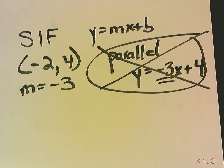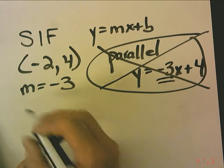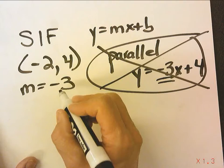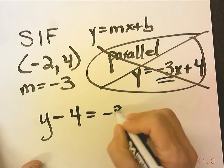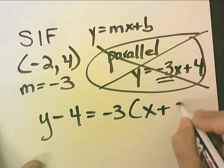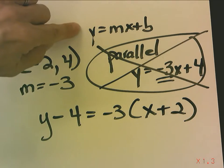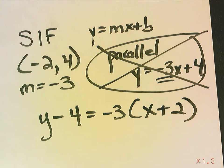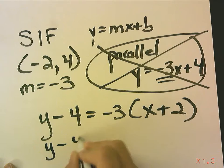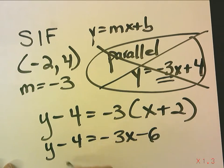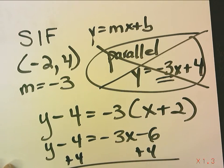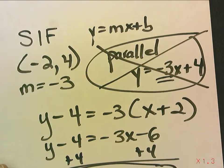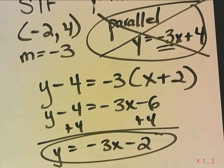So now I know I have a point of negative 2, 4, and a slope of negative 3. So now when I have a point and a slope, I go into point-slope form: y minus 4 equals negative 3 times x plus 2. Notice, even though they want it in slope-intercept form, I don't go directly into slope-intercept form, because it's much easier to go into point-slope form. Now I distribute, and now I add 4 to both sides.